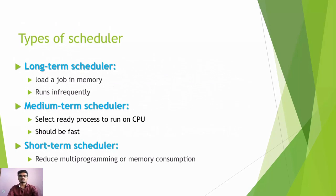There are three types of schedulers: long-term scheduler, mid-term scheduler, and short-term scheduler. In the long-term scheduler, it loads a job into memory and runs infrequently. In the mid-term scheduler, it selects a ready process to run on the CPU and it should be fast. In the short-term scheduler, it reduces multiprogramming and memory consumption.